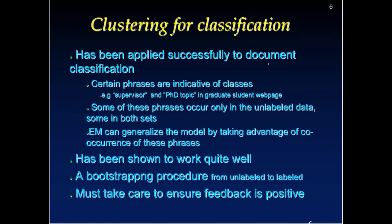This approach has been successfully applied to document classification. For example, attributes for classifying a web page could be keywords like a supervisor name or a PhD topic, which indicates it is a professor's webpage. But this labeling cannot be done for all pages — many times the data is unlabeled. So use supervised algorithms to find out the label of each page, then include the unlabeled data with the labeled data and continue retraining the model until you find better accuracy or some convergence criterion is met.